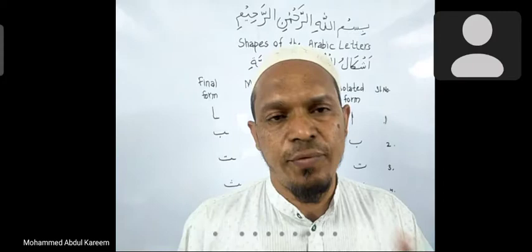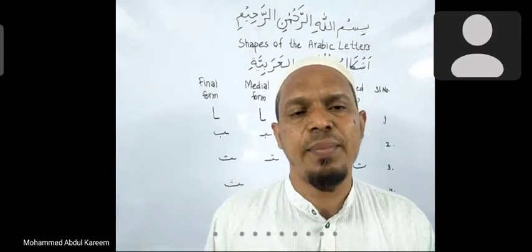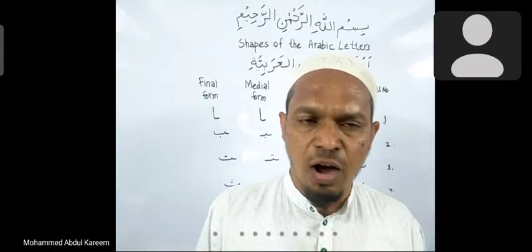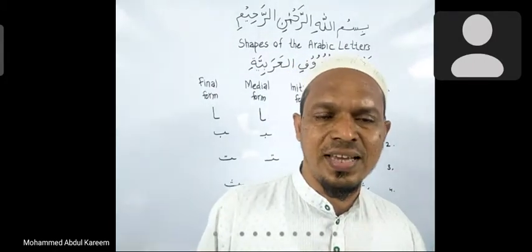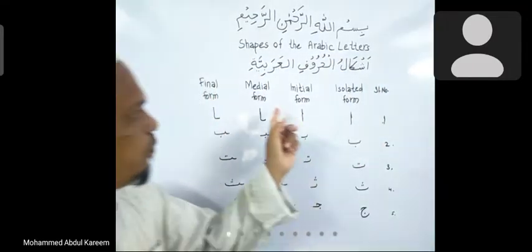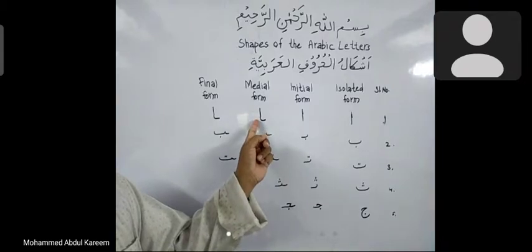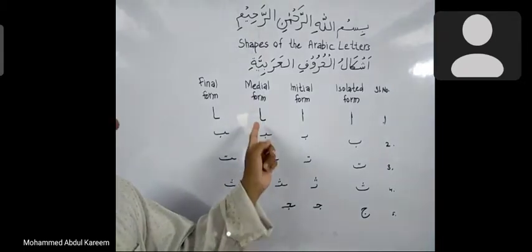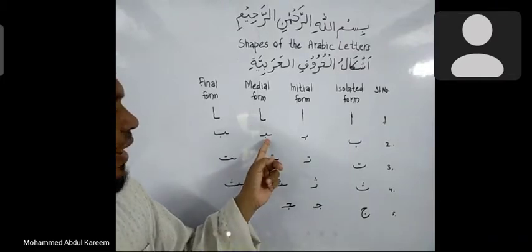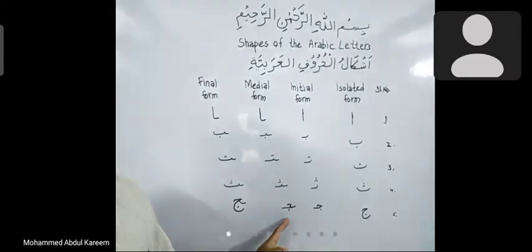Medial form means the letters appear in the middle of the word. They are written in half form and they can be joined to the previous letter as well as the following letter. This is the medial form of alif — alif cannot connect to the following subsequent letters — and medial form of ba, ta, sa, and jim.